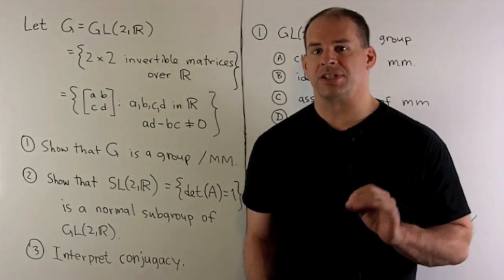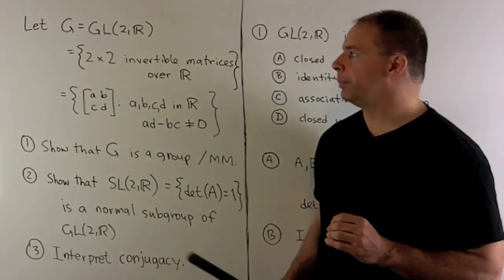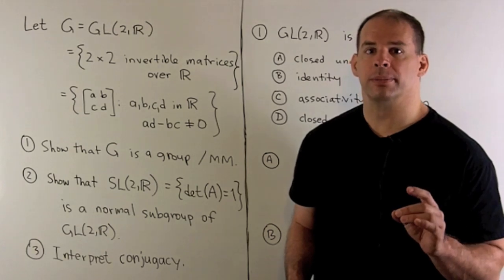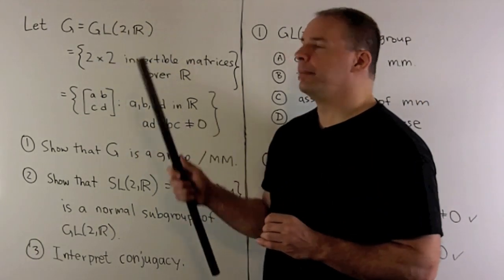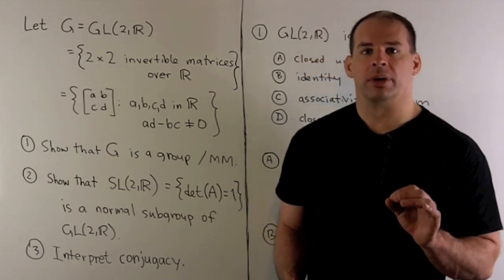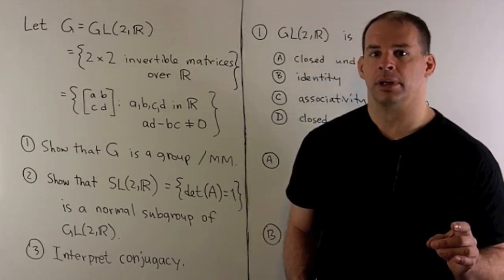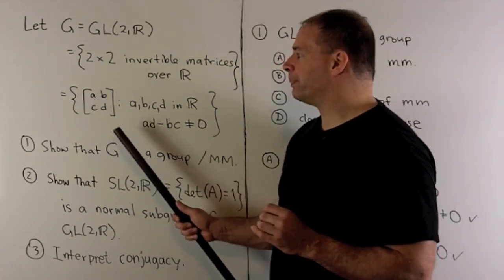Here's an example of a group if you've had some linear algebra. I'm going to let G be equal to two by two invertible matrices over the real numbers. The fancy name for this is GL(2,R), the general linear group: two by two matrices with real entries.